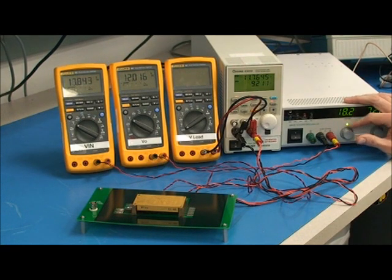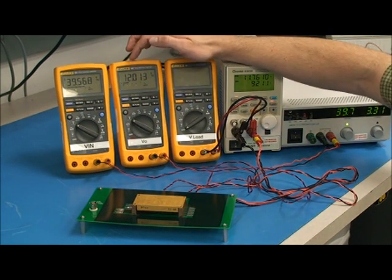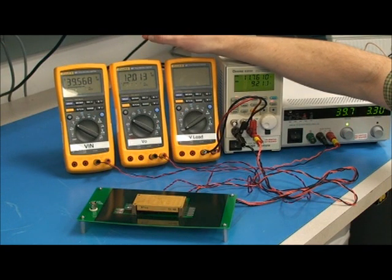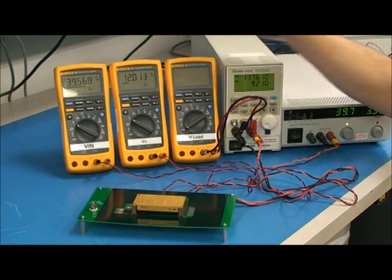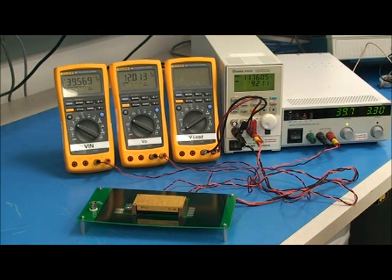As V-in is varied up to 40 volts, V-out has changed to 12.013, which is a variation of 4 millivolts, well within the specs of the datasheet.